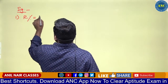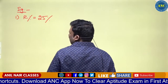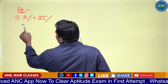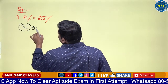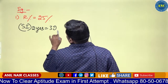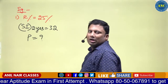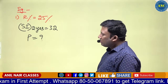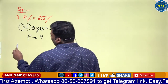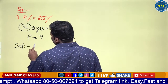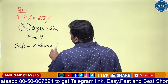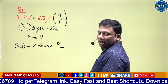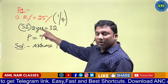R percentage is 25%. SI for two years is 32. Find the principal. Solution: 25% is equivalent to 1 by 4. Two years are given, so k equals 2. Assume principal as denominator power k: 4 squared equals 16.